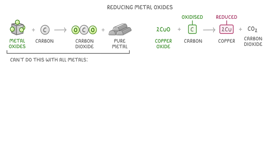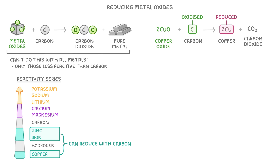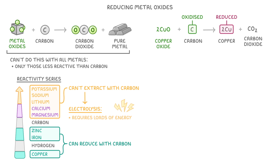Unfortunately, though, we can't do this with all metals — only the ones that are less reactive than carbon. And this is the reason why we place carbon in our reactivity series. We can see from this list that we can use the reduction with carbon technique to extract zinc, iron, and copper from their oxides. But we couldn't extract any of these more reactive metals. For those, we'd have to use a process called electrolysis, which we'll cover in another video, but it basically requires loads of energy and so is really expensive.